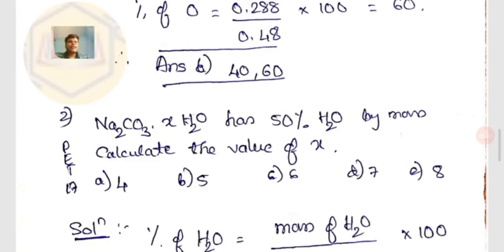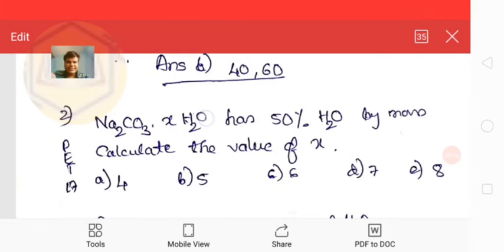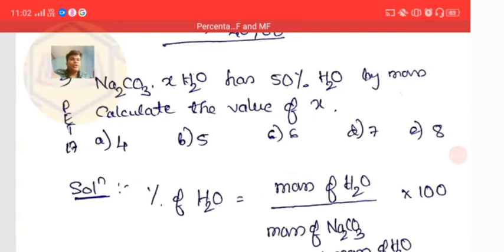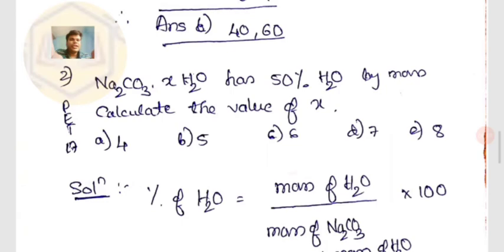Next question: Na₂CO₃·XH₂O (sodium carbonate, or washing soda) has 50% water by mass. Find the value of X. The percentage of H₂O can be expressed as: mass of XH₂O / (mass of Na₂CO₃ + mass of XH₂O) × 100 = 50%.